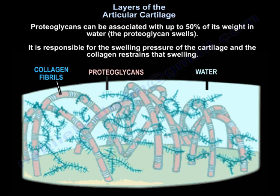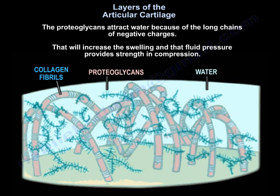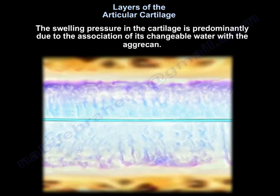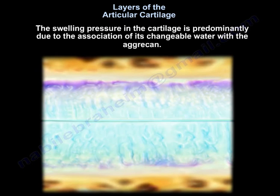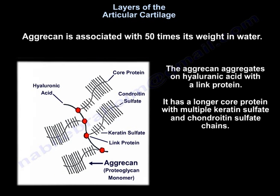The proteoglycan can be associated with up to 50% of its weight in water, so the proteoglycan swells. It is responsible for the swelling pressure of the cartilage, and the collagen restrains that swelling. The proteoglycan attracts water because of the long chains of negative charges, increasing the swelling, and that fluid pressure provides strength in compression. The swelling pressure is predominantly due to aggrecan, which associates with up to 50 times its weight in water. Aggrecan aggregates on hyaluronic acid with a link protein and has a long core protein with multiple keratan sulfate and chondroitin sulfate chains.